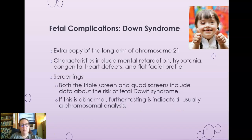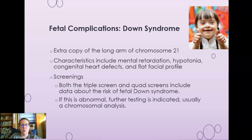Down syndrome is another fetal complication — it involves an extra copy of the long arm of chromosome 21. Characteristics include intellectual disability, hypotonia, congenital heart defects, and a flat facial profile. The triple screen and quad screen include data about the risk of fetal Down syndrome. If abnormal, further testing is usually done, including chromosomal analysis with amniocentesis.